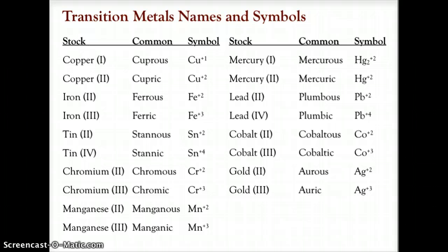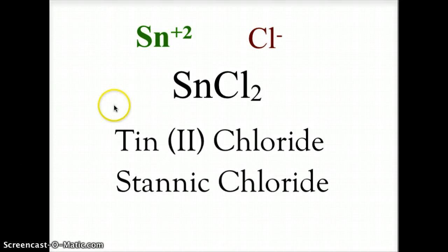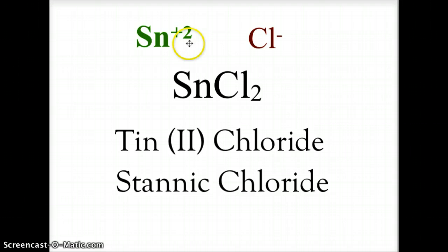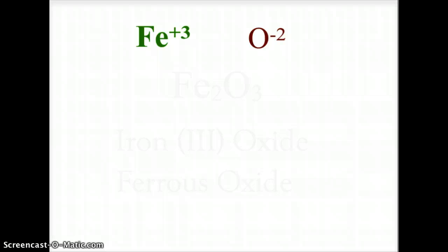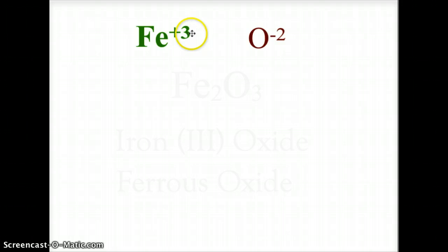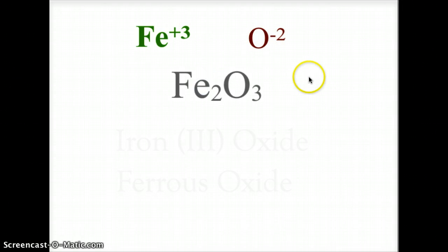Let's look at how these might form ionic bonds in a compound. Here we have tin, Sn²⁺, combining with chloride, Cl⁻¹, and we get tin chloride. Because we're using the plus-two, we know the tin is tin(II) chloride, or it could also be stannous chloride. For another example, iron in its plus-three form and oxygen minus-two: we need two of the plus-three to combine with three of the minus-two so their charges balance at six, giving us Fe₂O₃.